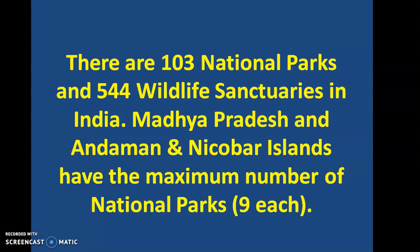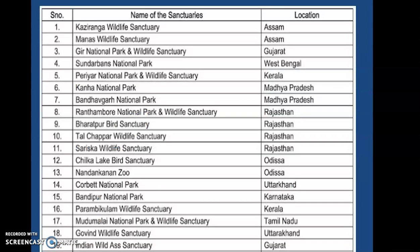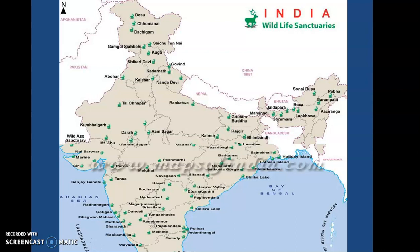There are 103 national parks and 544 wildlife sanctuaries in India. Madhya Pradesh and Andaman and Nicobar Island have the maximum number of national parks, each having nine. Here are some wildlife sanctuaries you can see. For example, Samar Bharatpur Bird Sanctuary in Rajasthan — the only place in India where Siberian and sarus cranes are found.